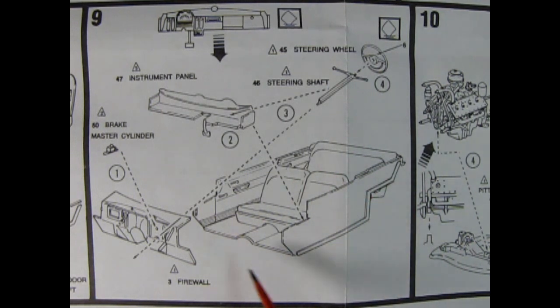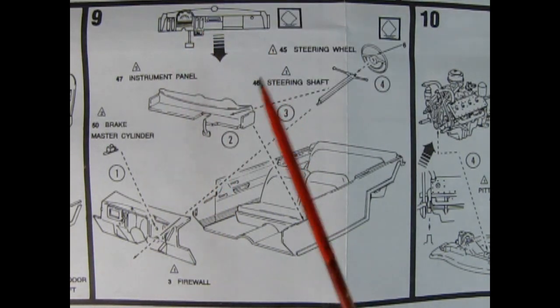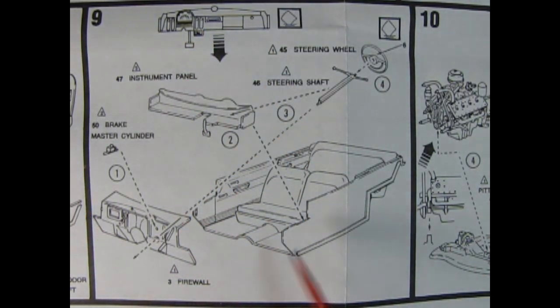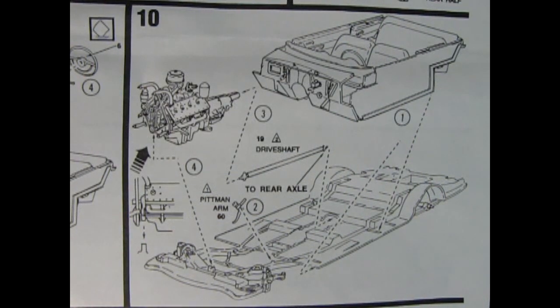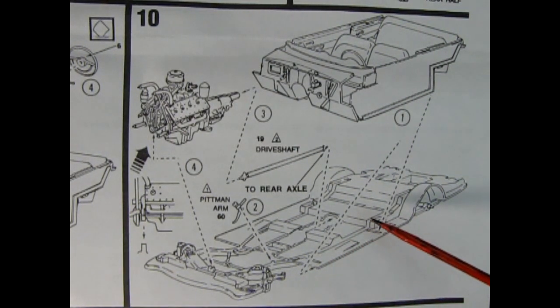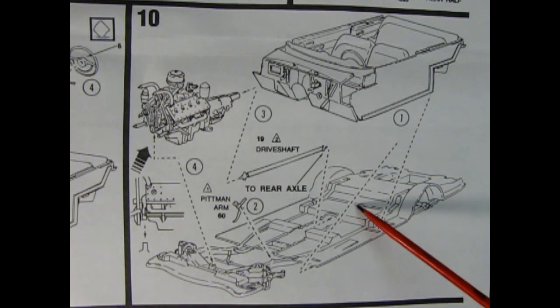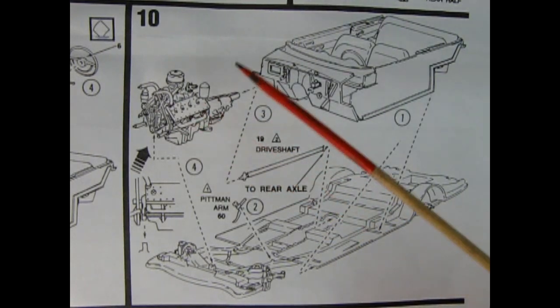Now after our bucket is completed we have our steering wheel and steering column which will glue into the dashboard in this little notch and then in front we've got our firewall and our master cylinder. Panel 10 shows our completed interior dropping down onto our frame and then our drive shaft will go into the rear axle and hook up on the back of the transmission of our engine.